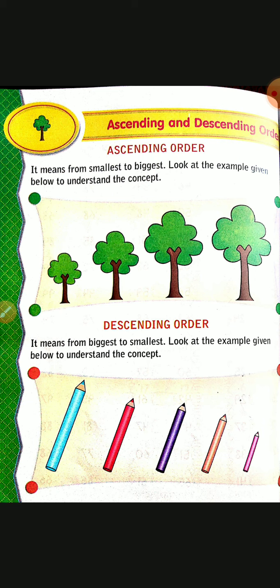Like this, order-wise we have to arrange numbers. For example: 1, 2, 3, 4 — we can arrange from the smaller number to the bigger number. That is called ascending order.